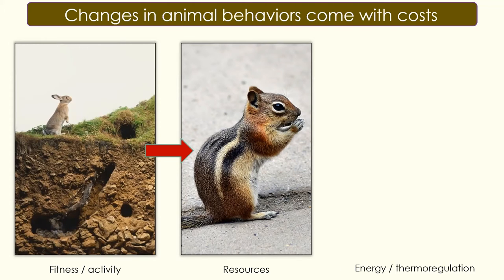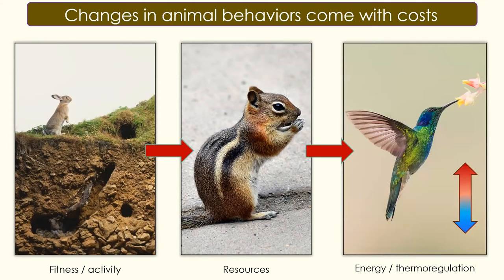Changes to resource costs can directly affect the energetic costs — the energy necessary for an animal to do its daily function. For example, a lot of species of hummingbirds require an insane amount of fuel and energy for them to do their daily activity and to thermoregulate properly, which is important for them to sustain flight and do other activities.